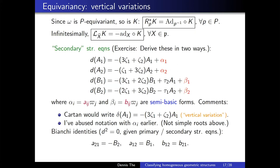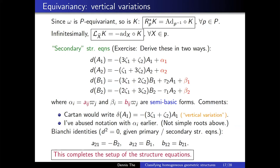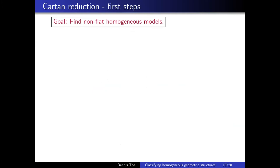We also have Bianchi identities: D² = 0 applied to the entire Cartan connection, substituting all structure equations, reduces to a list of three equations. This completes the setup of the structure equations. Observe that the first two of these imply: if A1 and A2 are zero, then the little a's are zero, which implies the B's are zero. This supports the statement that harmonic curvature is a complete obstruction to flatness — if harmonic curvature (A1 and A2) is zero, then everything else (B1, B2) is also zero.